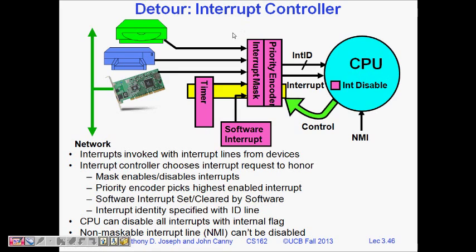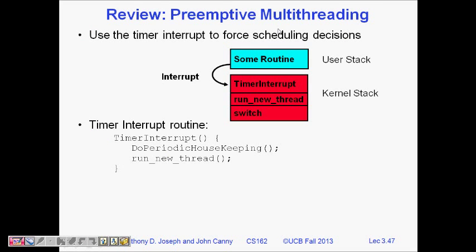As a detour, let's look at the interrupt controller. An interrupt is invoked via interrupt lines from a device — these are physical things. For example, when you insert a CD or DVD, the device makes an interrupt to the computer so it knows work needs to be done. The interrupt controller decides which interrupt request to honor — it checks priority and may enable or disable certain interrupts as needed.